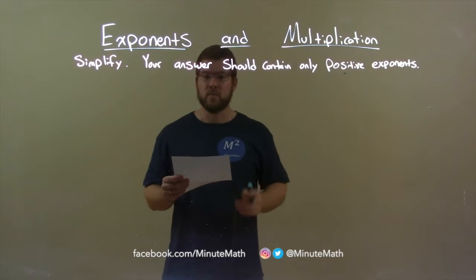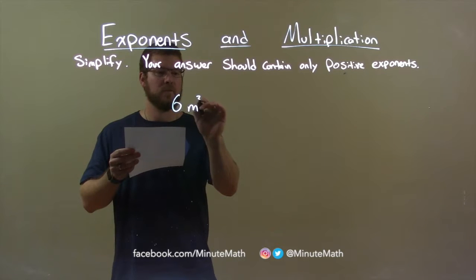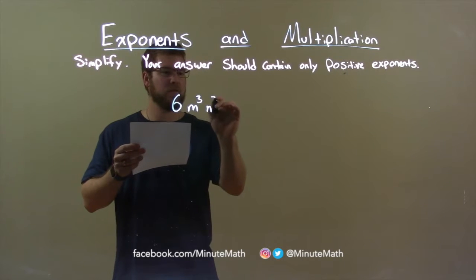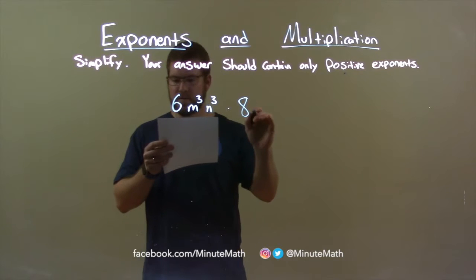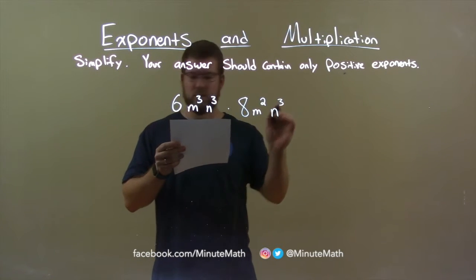We're going to simplify, and our answer should contain only positive exponents. So, if I was given this problem: 6m to the third power n to the third power times 8m squared times n to the third power.